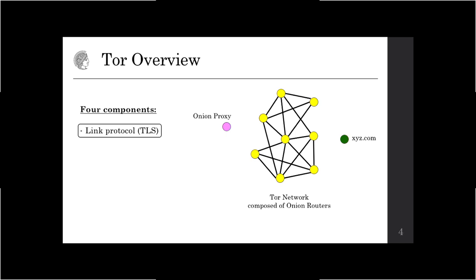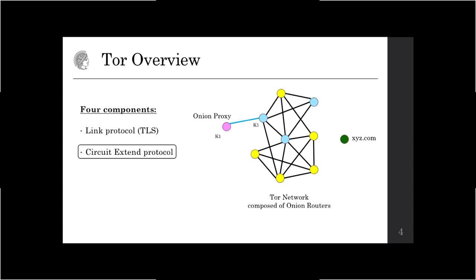The onion proxy will pick a subset of these nodes — the default number is three, marked in blue. Through these nodes it will establish a circuit. It makes a TLS connection to one of these nodes and then invokes the circuit extend protocol, which runs a series of key exchanges with each node in the circuit. Now that the onion proxy shares a symmetric key with each node in the circuit, onion encryption can be used to protect all traffic flowing through the circuit. This part is handled by the relay protocol.